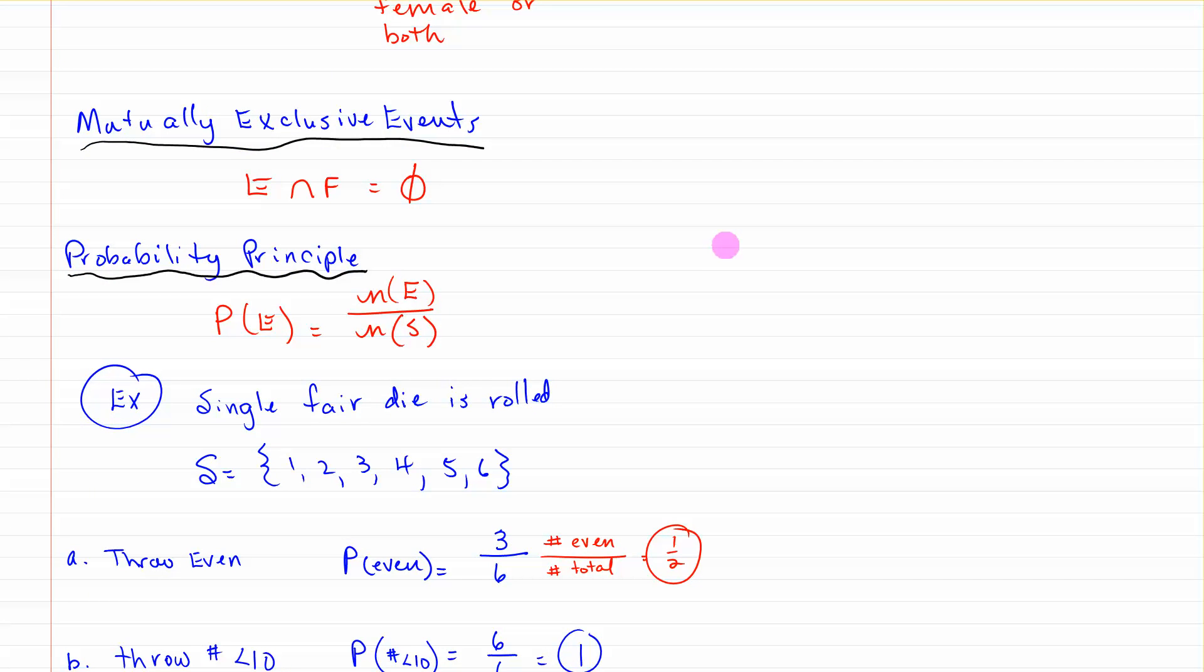Mutually exclusive events occur when E intersect F gives you the null set. They knock each other out, they're mutually exclusive. And this one is important, we'll be doing several things with this, the probability principle. The probability that an event occurs equals the number of possible things in the event divided by the number of the sample space.